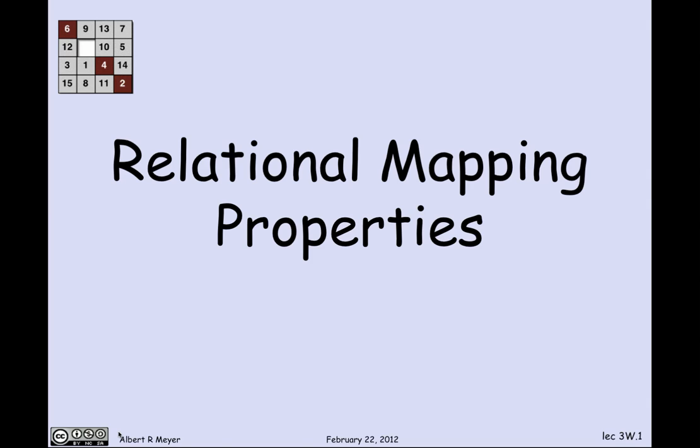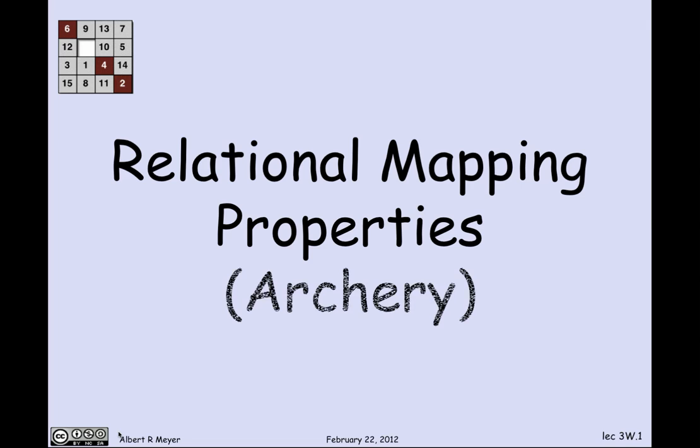In this short segment, we'll talk about some relational properties called mapping properties. They can also be referred to as archery on relations. This segment is mostly vocabulary — there are a half a dozen concepts and words that are standard in the field and that one needs to know to do discrete math. The applications will come in the next short segment where we start applying these properties to counting, although there'll be a punchline about counting at the end of this segment.